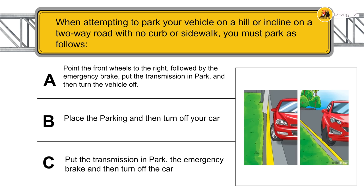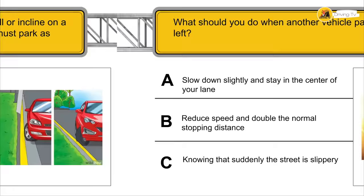When attempting to park your vehicle on a hill or incline on a two-way road with no curb or sidewalk, you must: point the front wheels to the right, apply the emergency brake, put the transmission in P park, and then turn the vehicle off.